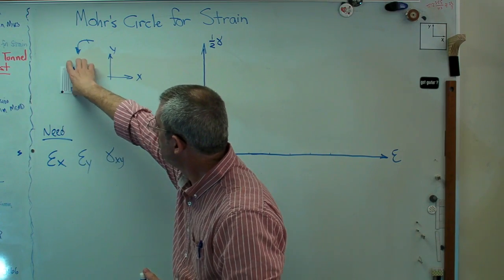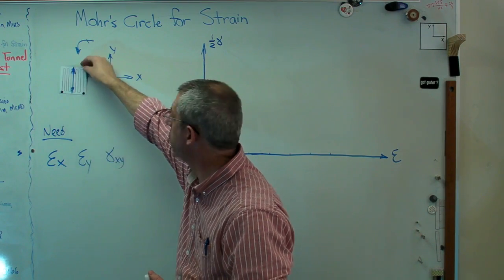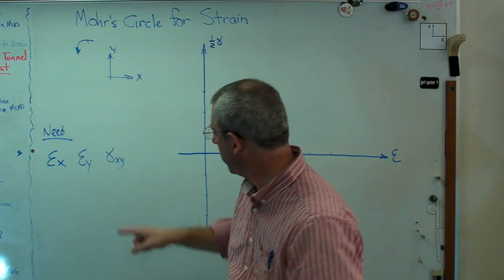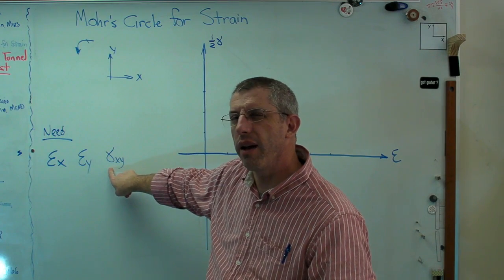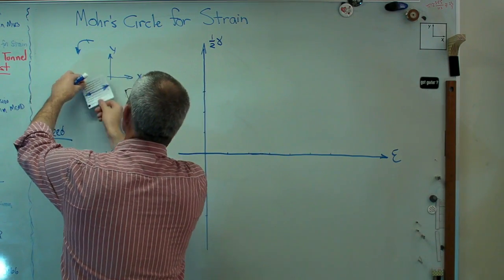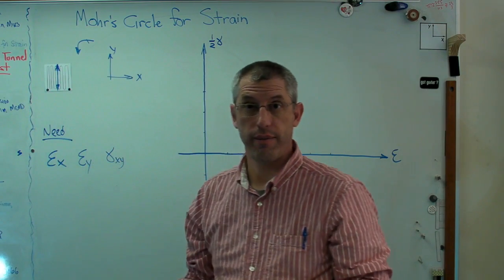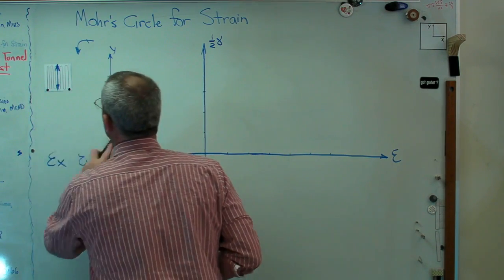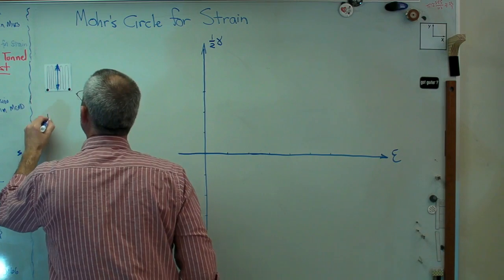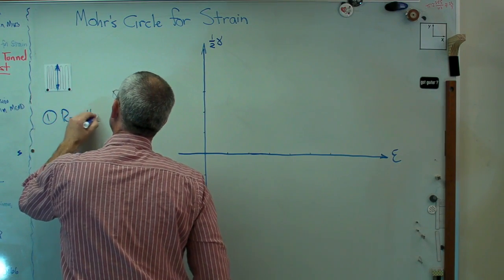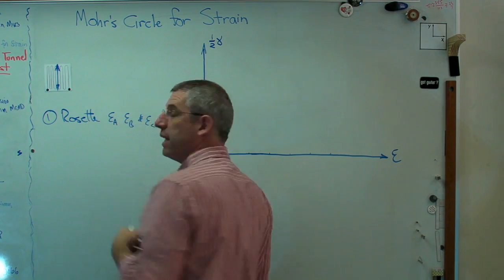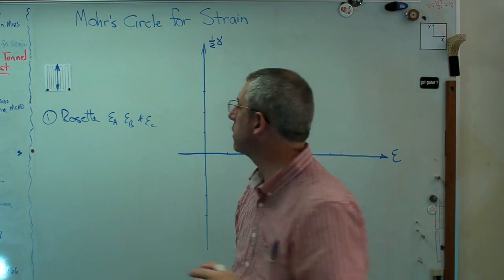So we've got one gauge will give us a strain in one direction. Well, if I've got three things I've got to calculate, I'm going to need three gauges. My regular gauge measures normal strains. So what I can do is I can take one gauge, and another gauge, and another gauge, and I can make a rosette. Here's the recipe on how this typically works. One rosette gives you epsilon a, epsilon b, and epsilon c. It gives you the strains, normal strains, in three directions.